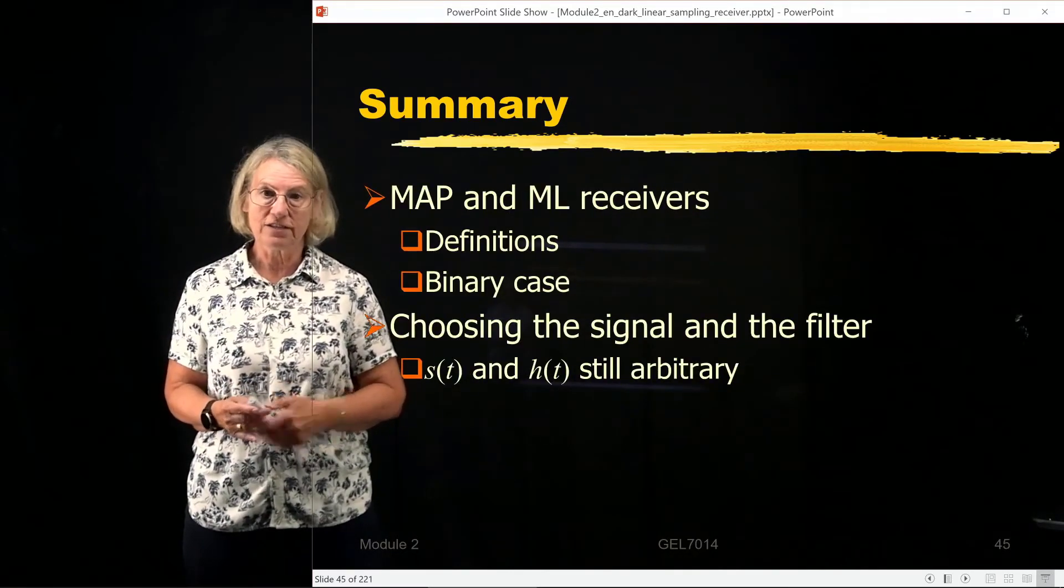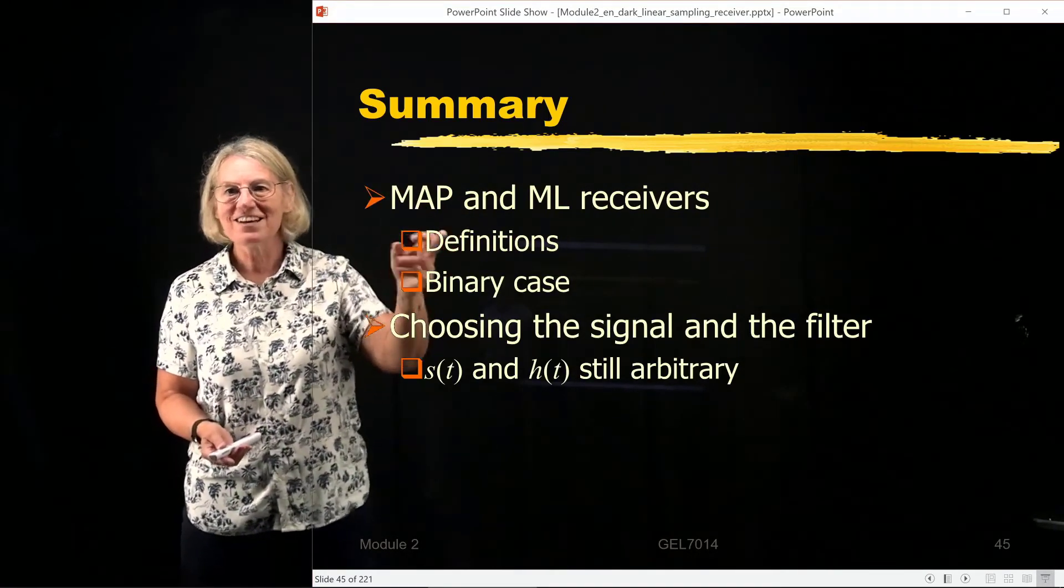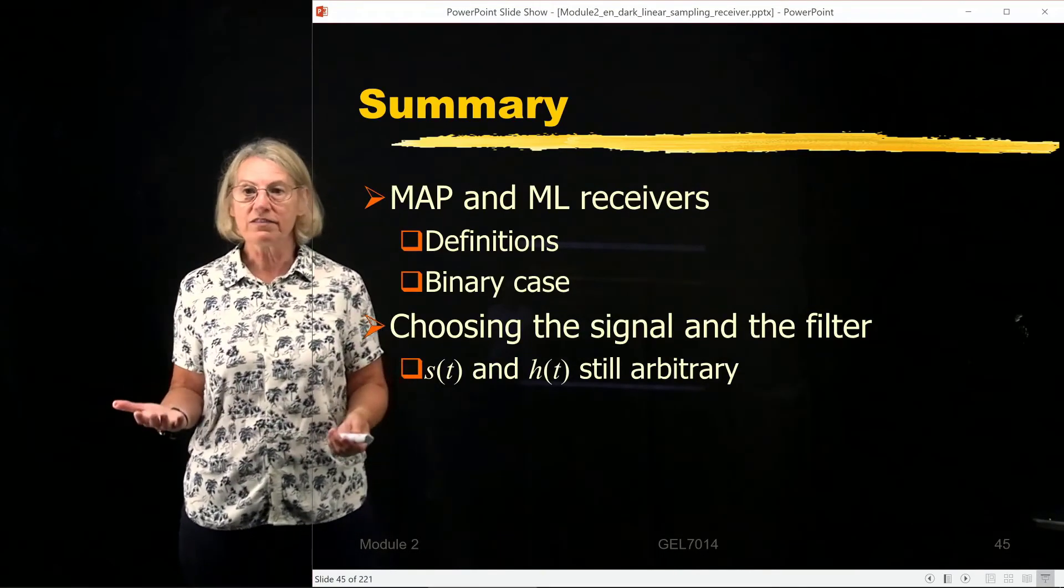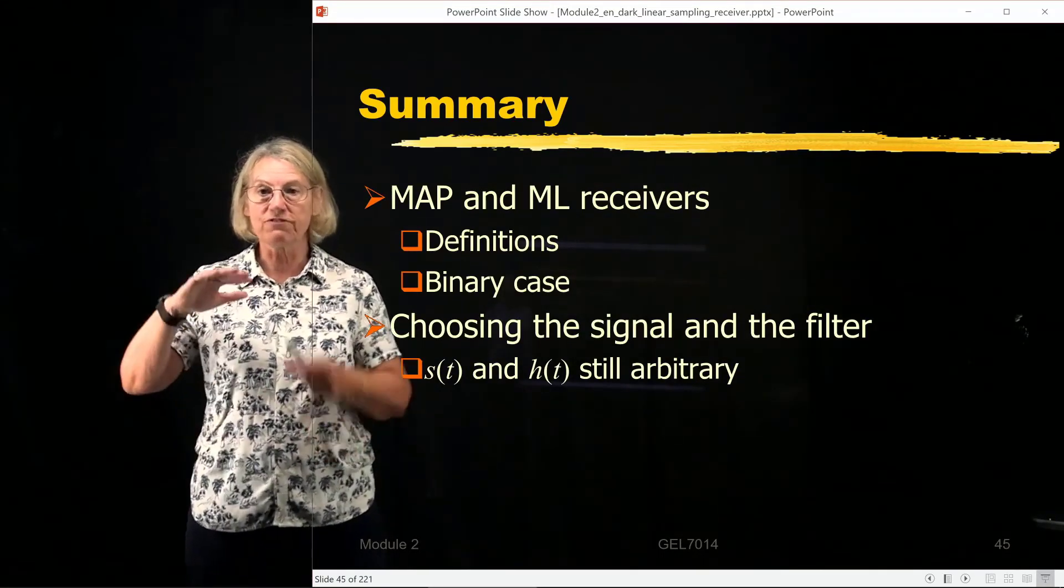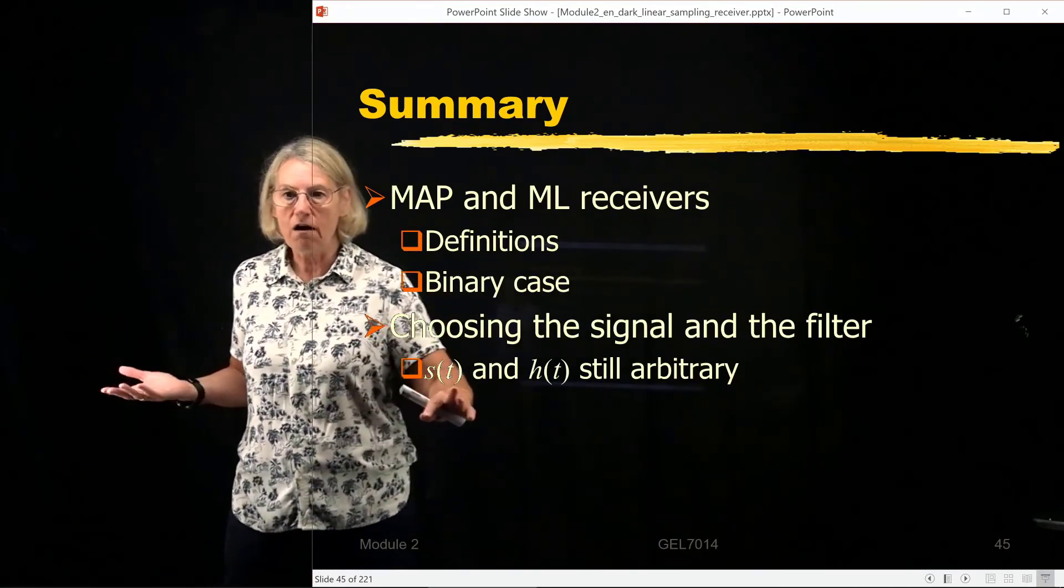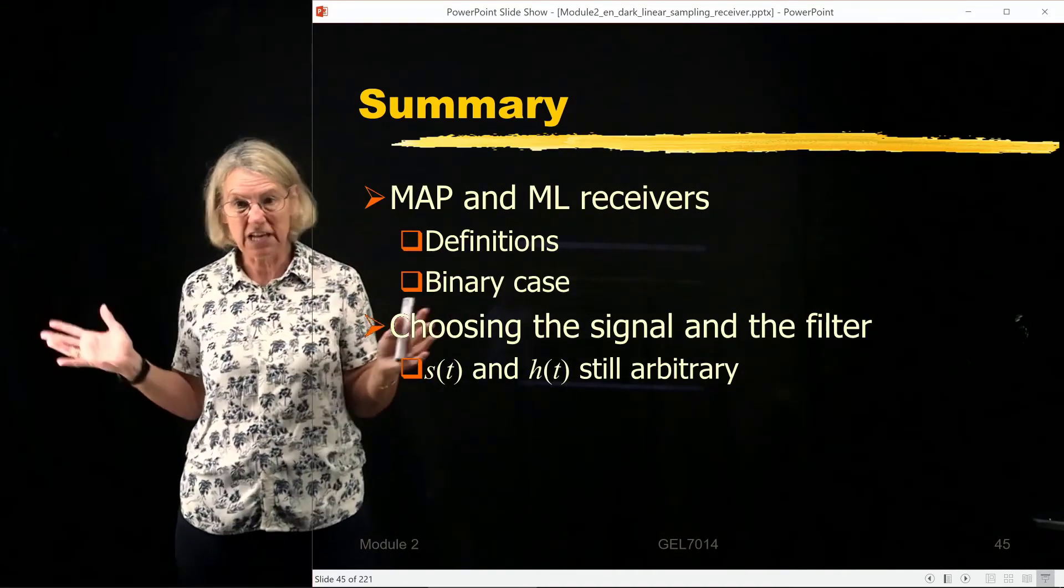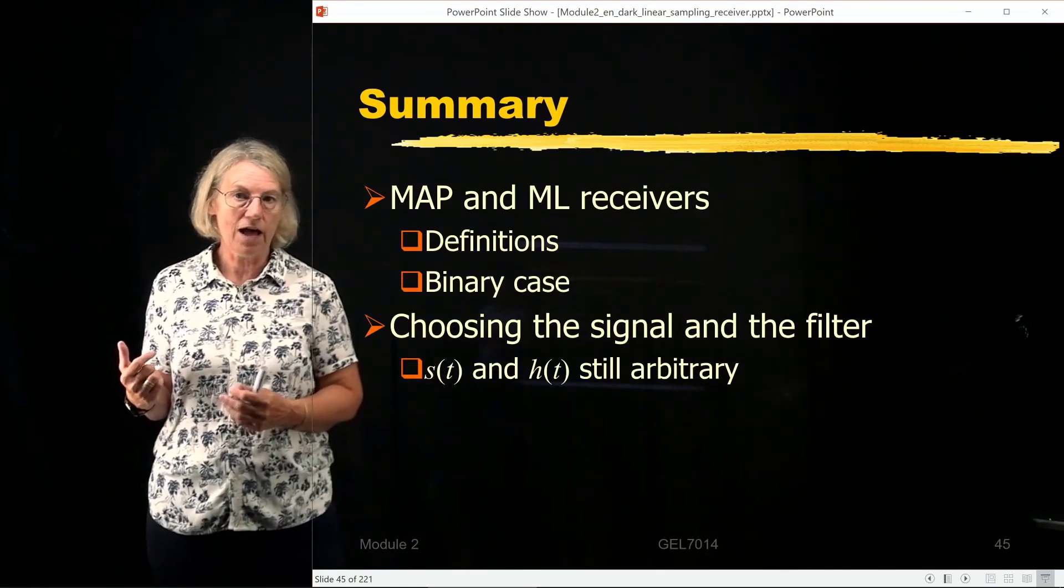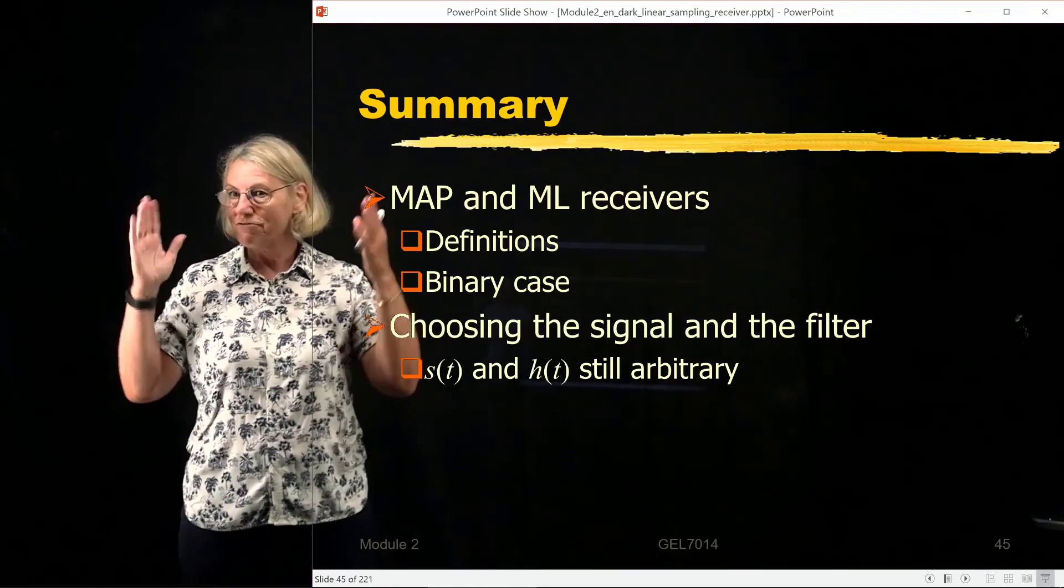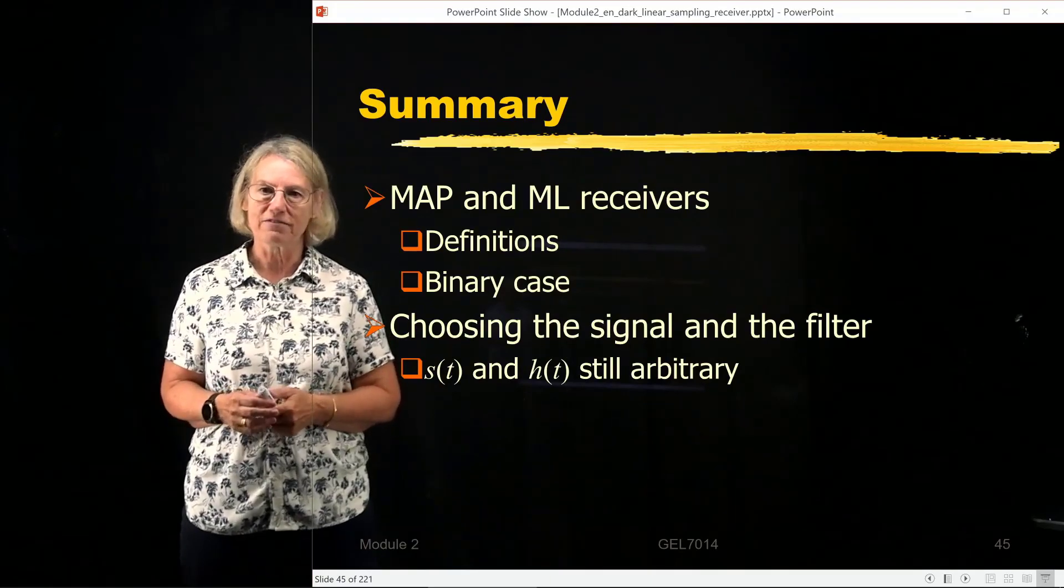So we've looked at the definitions, we've looked at the equations of the binary case, and the next part that we have to address, now that we've sort of finished the part about the decision box, is what do we choose for our waveform? What shape do we use? Do we use a rectangle? Do we use something else? And what about our linear filter? What informs that choice of what the response should be? So we've finished the detection part of the box, but we still have to look at the filtering part of the box.